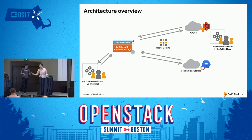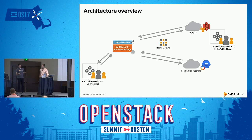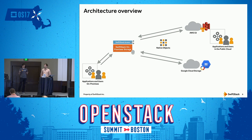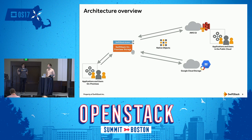We'll dive into the architectural overview. At the high level, we have applications and users envisioned on both sides — someone accessing from Swift on-premises, and users and applications running in Amazon S3 or Google Cloud Storage, the two providers we've looked at so far. One of our goals was to have native objects on both sides, staying away from the existing gateway model where you have to run a gateway in the public cloud. We want to preserve the native format so you can leverage EMR or whatever existing workflows exist in Amazon or Google.